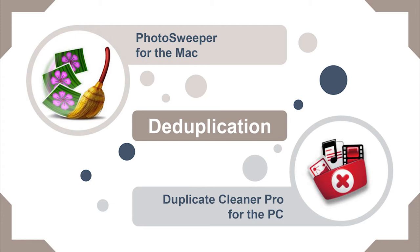They both work in a very similar way. Ultimately what they do is a lovely scan across all of your catalogue to find photos it thinks are duplicates. It can look for exact matches — say you've made a backup or copied it — and the app will find it, flag it, and you can delete it. You can also tell it to find things that are a little bit similar, a fuzzy match. You know the ones — you take five different photos of your family to make sure none are blinking, or you accidentally take a burst photo. You can ask the app to look at photos taken within a certain time window and it will flag them as a group of duplicates.